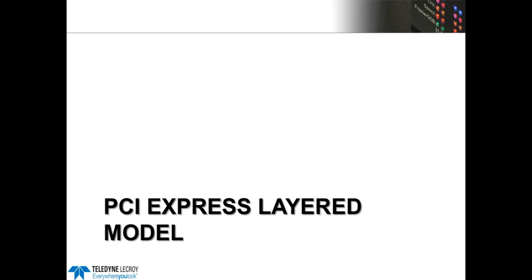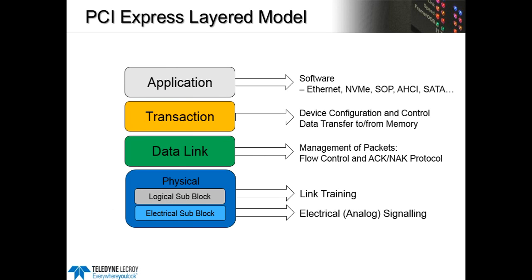The first thing I'm going to talk about is the PCI Express layered model. PCI Express was built on this model, which allowed it to develop from conventional PCI and PCIX. The upper layers were taken over from PCI and PCIX, which allowed software to remain very similar in the way it manages I/O for the system. The main differences are around the physical layer, but the way a device is configured is very similar — whether it's a PCI device from 20 years ago or a PCI Express Gen 3 device today.